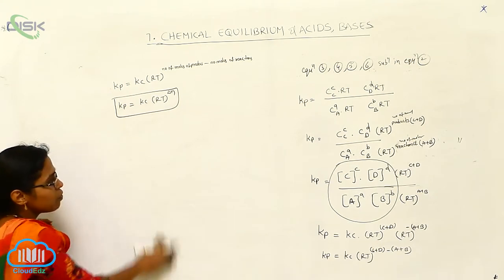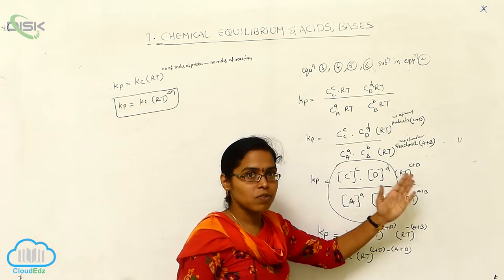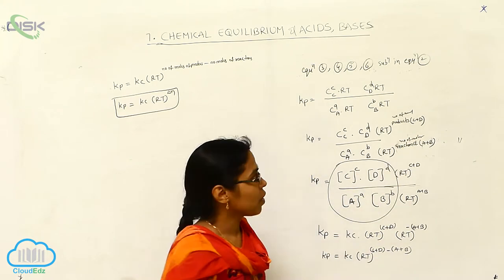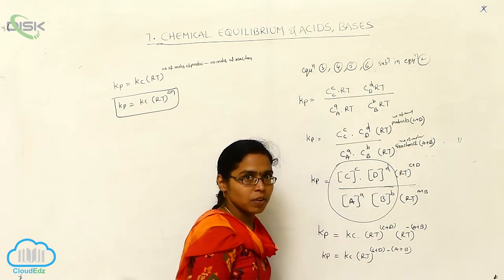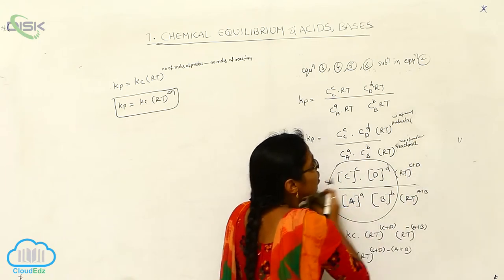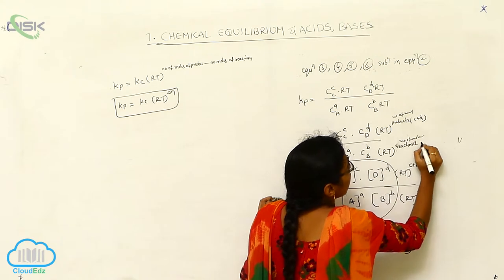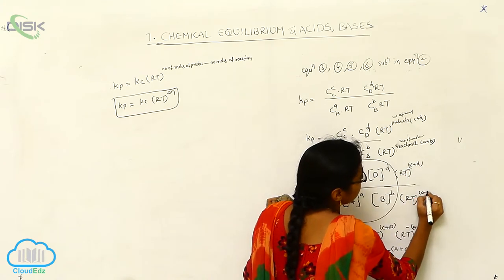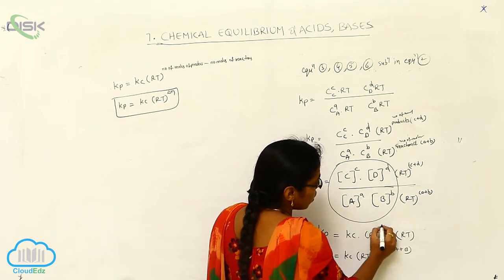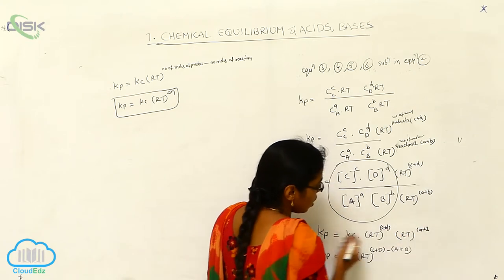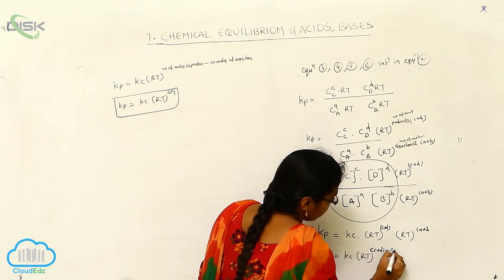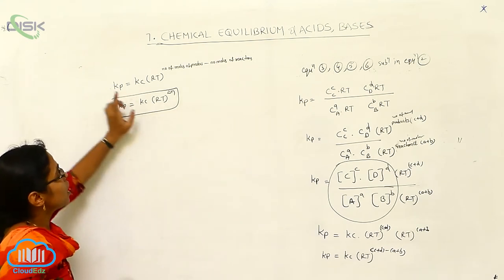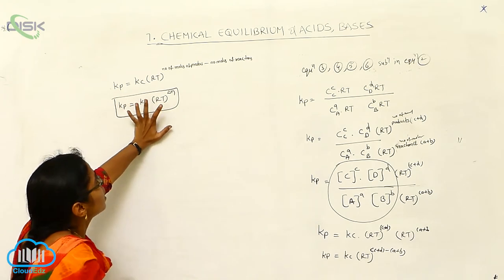If you are not able to write capital letters, you can also write small letters. Small letters indicate the number of moles, while capital letters indicate the reactants and products. If you want to write the small versions, that is also a correct answer. Delta N is the number of moles of products minus number of moles of reactants. So the relationship between Kp and Kc is: Kp is equal to Kc · RT to the power of delta N.